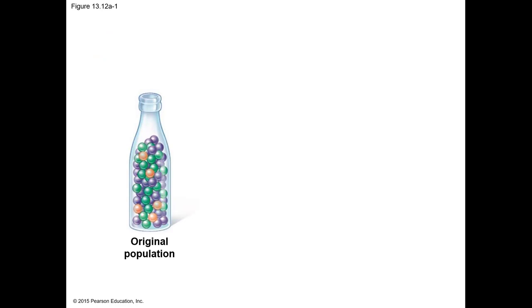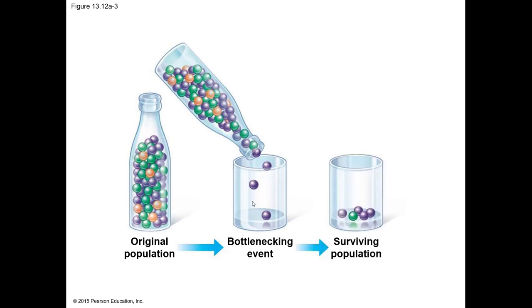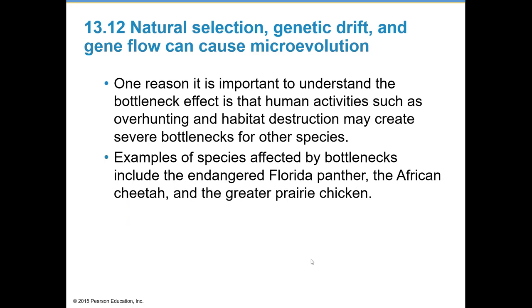After a population is drastically reduced by a bottleneck event, genetic drift may continue for many generations until the population is again large enough that chance fluctuations have less impact. In our marble illustration, the surviving population is less genetically diverse than the original, with no representatives of the orange color. Human activities such as over-hunting and habitat destruction can create severe bottlenecks; examples of affected species include the endangered Florida panther, the African cheetah, and the greater prairie chicken.